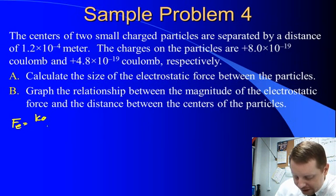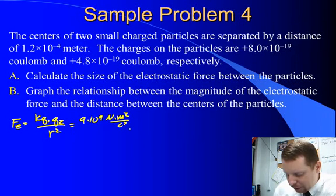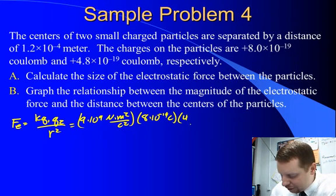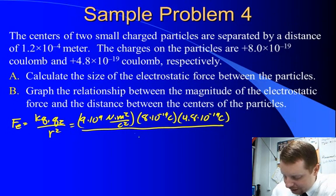Fe equals K Q1 Q2 over R squared, or 9 times 10 to the 9th Newton meters squared per Coulomb squared, times our first charge, 8 times 10 to the minus 19 Coulombs, times our second charge, 4.8 times 10 to the minus 19 Coulombs, all divided by the square of the distance between them, 1.2 times 10 to the minus 4 meters squared.